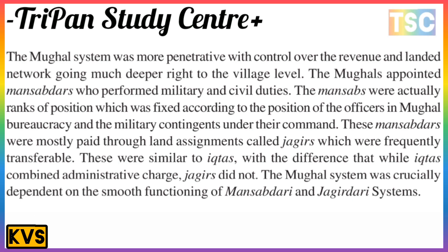The Mughal system was more elaborate and creative, with control over revenue and land networks going much deeper, right down to the village level. The Mughals appointed mansabdars who performed military and civil duties. The mansab was a rank or position fixed according to the officer's position in the Mughal bureaucracy, the military contingent under his command. These mansabdars were mostly paid through land assignments called jagirs, which were frequently transferable, similar to the iqta but without administrative charge.